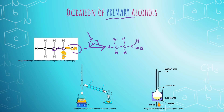We can oxidize a primary alcohol — in this case, we had propan-1-ol — and now we have propanal, an aldehyde with the carbonyl group at the end of the molecule.